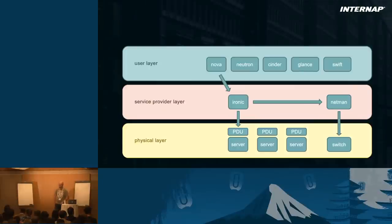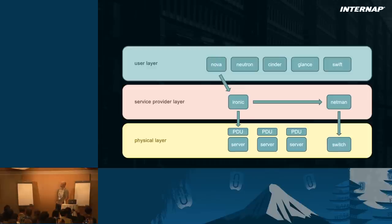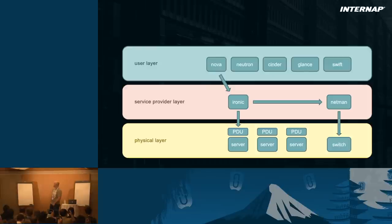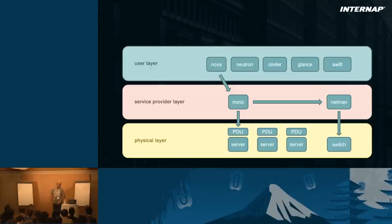The user will interface with OpenStack at the top layer. The middle layer — the service provider layer — is for us. We have Ironic and Netman, which we'll come back to. These two have APIs very similar to the rest of the OpenStack ecosystem, but they are reserved for our operations — internal only. And we have the physical layer, which is the actual metal that still exists, because sometimes at the OpenStack summit, people are really high in the cloud, but it all comes down to metal, electricity, and all that stuff.